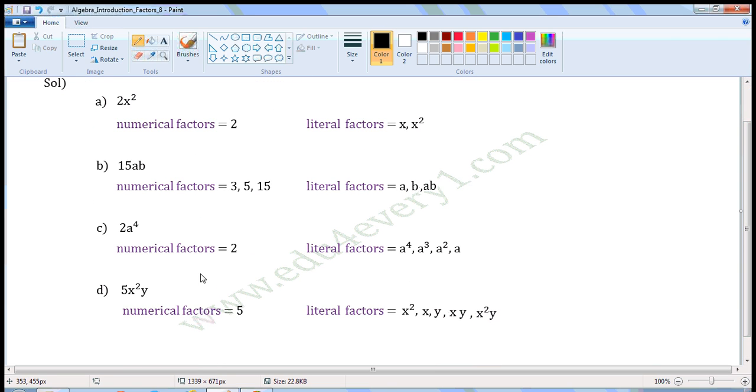Next one, 5x square y. In this, the numerical coefficient is 5. It is a prime number. So, numerical factors is equal to 5. Literal coefficient is x square y. So, its factors are x square, x, y, xy, x square y.